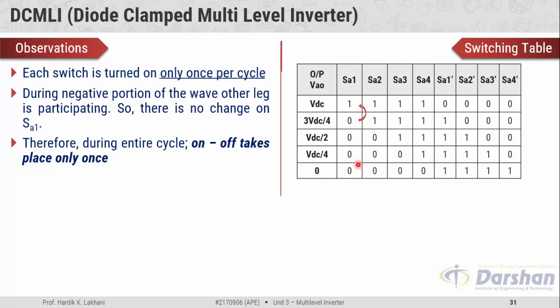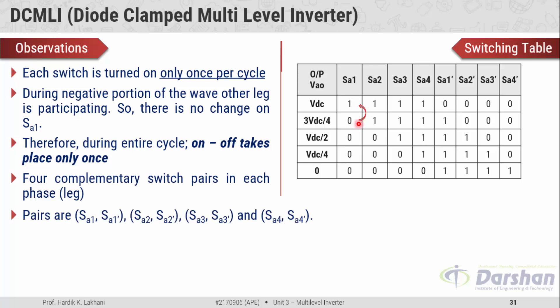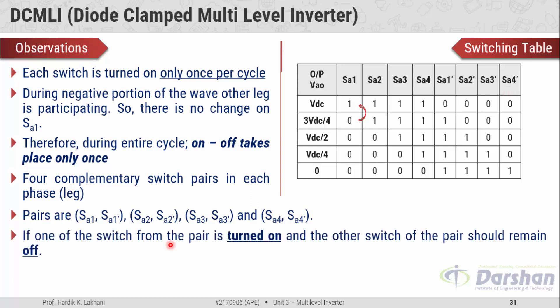There are four complementary switch pairs in each leg: SA1 & SA1', SA2 & SA2', SA3 & SA3', and SA4 & SA4'. Similarly, we have to use four complementary switch pairs for leg B to produce a complete cycle at the output. If one switch from a pair is in the on state condition, then the other switch should remain in the off state. From the switching table, whenever SA1 is in the on state, its complementary switch SA1' is in the off state. For the first four levels, SA1 is off but SA1' is in the on state condition.